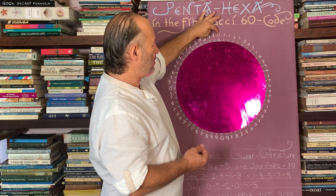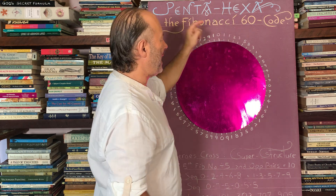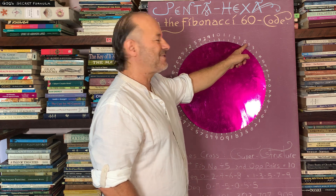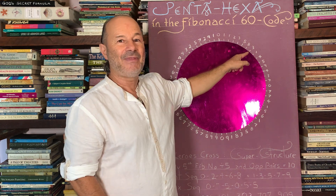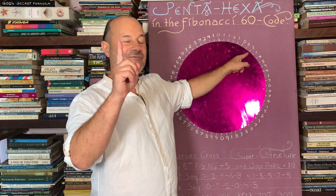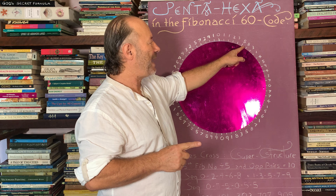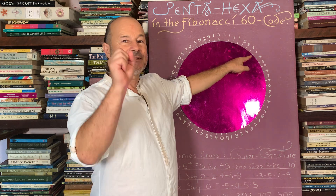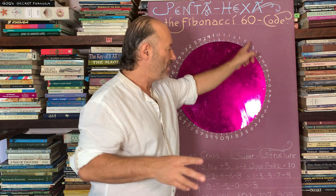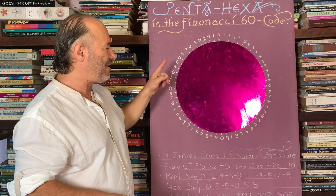So we start from 0, 1, 1, 2, 3, 5, 8. We keep adding: 3 and 5 is 8, 5 and 8 is 13, but when we get to 13 we must take away 10. So 10 from 13 is a 3. The next number is 8 plus 13 is 21 — take away 10 and another 10, we're left with a 1. So we're looking at the final digits, the end digits, and these 60 numbers repeat forever.